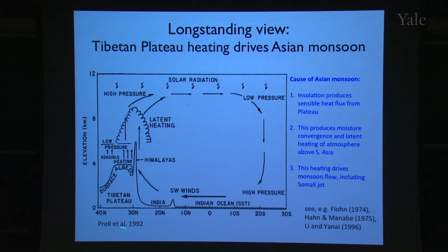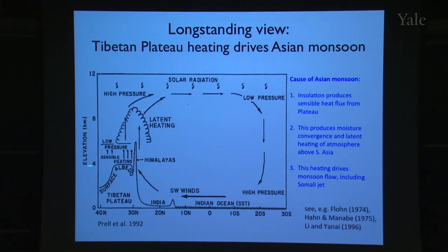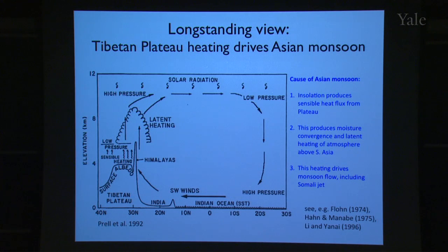This schematic from Prell et al. 1992 encapsulates a theory going back to papers in the 1970s and 1950s, which posits that the Tibetan plateau is the dominant forcing for the South Asian monsoon — that this elevated, horizontally broad land surface absorbs solar energy and, because of its elevation and broadness, heats the troposphere at mid-levels, creating via a positive feedback with moist convection this giant inter-hemispheric South Asian monsoon circulation.